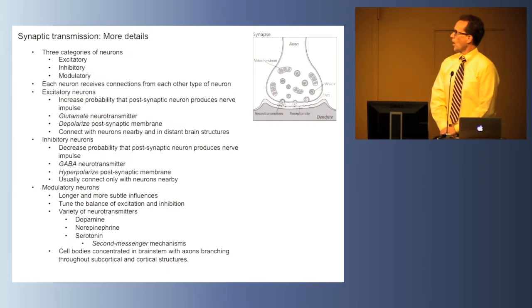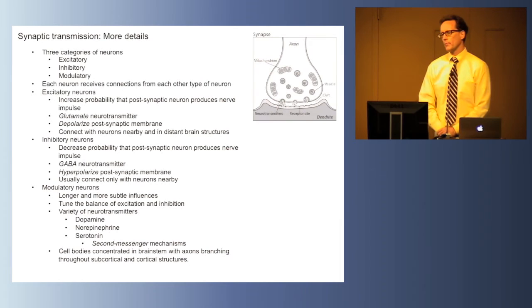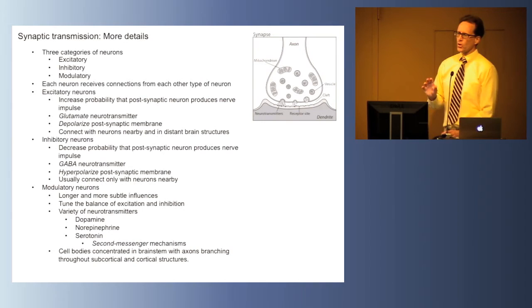Let's review and get into more details about synaptic transmission. We understand there are three general types of neurons: excitatory neurons, inhibitory neurons, and modulatory neurons. Excitatory neurons form a synapse on a cell and the transmission at that synapse increases the probability that the postsynaptic neuron will produce a nerve impulse. Most commonly, excitatory neurons use a neurotransmitter known as glutamate. The glutamate neurotransmitter binds to a receptor and causes depolarization, making the neuron less polarized, leading to the production of an action potential.